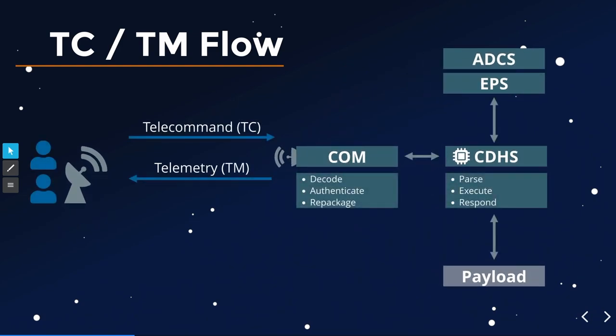How does the control flow work? A telecommand is whatever instructions you want to send to the satellite — rotate, turn on or off a device, start logging, start sending. The telecommand arrives at the communications module, gets decoded, hopefully authenticated, and repackaged to a command the CDHS understands. The CDHS executes it, responds with telemetry, and instructs all other components like the ADCS, electrical power supply, and payload. The CDHS is basically the top of the hierarchy — if you take control of it, you've got control over pretty much everything.